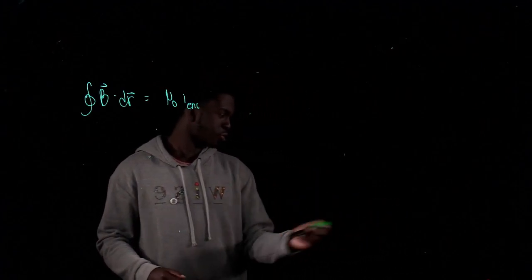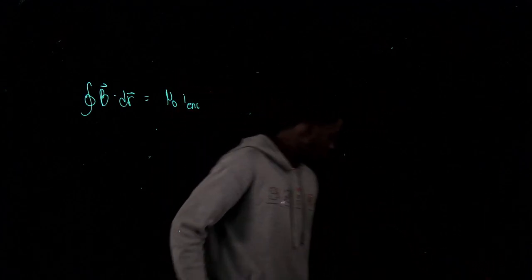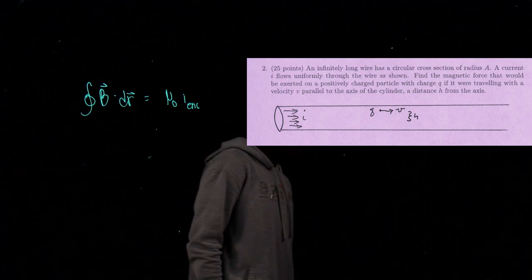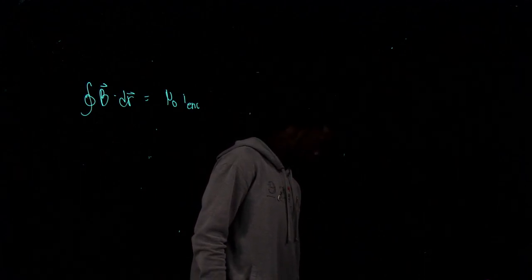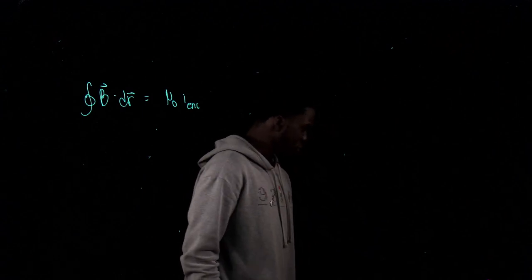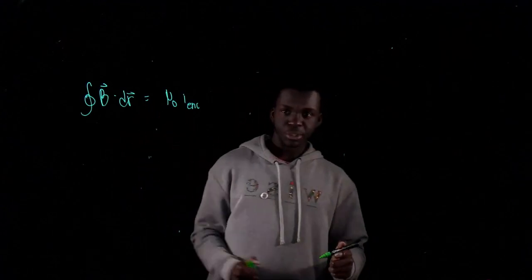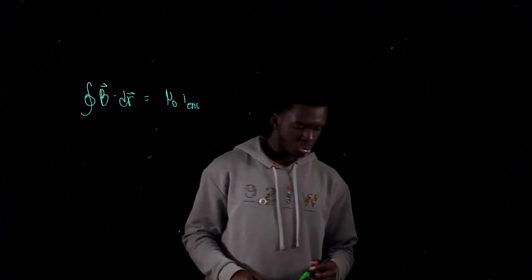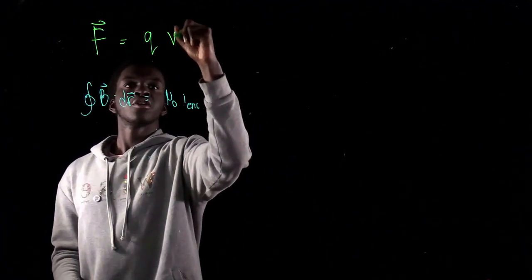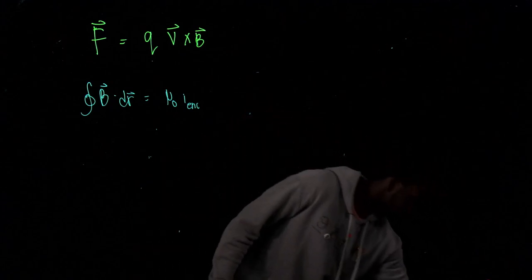Moving on to number two. An infinitely long wire has a circular cross-section of radius a; a current i flows uniformly through the wire. Find the magnetic force exerted on a positively charged particle q traveling with velocity v parallel to the axis of the wire at a distance h from the axis. We'll need two formulas: Ampere's law B·dr = μ₀ i_enclosed, and the Lorentz force F = q(v × B).